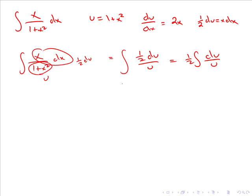Integrating du over u gives us one half ln u. Replacing u back, our answer for this aside is one half ln of 1 plus x squared.